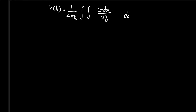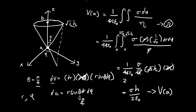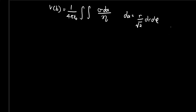So dA, using the same argument as before, is going to be equal to r divided by the square root of 2, dr dφ. As for η, because we're considering a point at point B, you can draw out the diagram. We have a cone, and we're standing at point B somewhere over here. If you're trying to get the distance from a point on the surface to point B — that line — that's going to be our η.